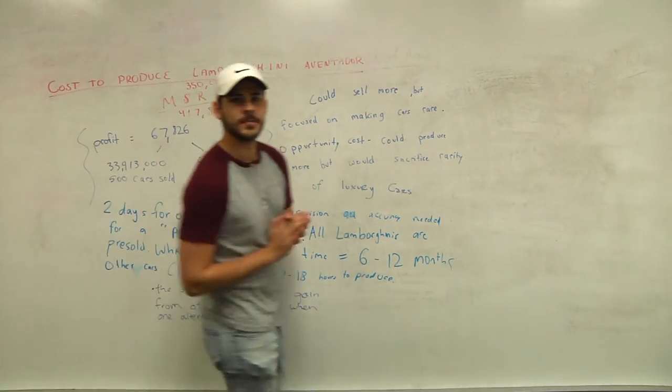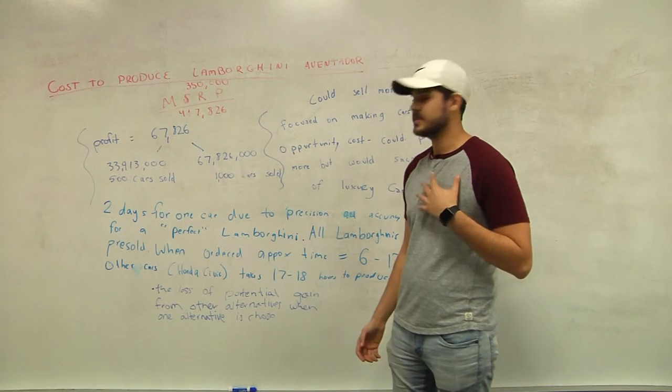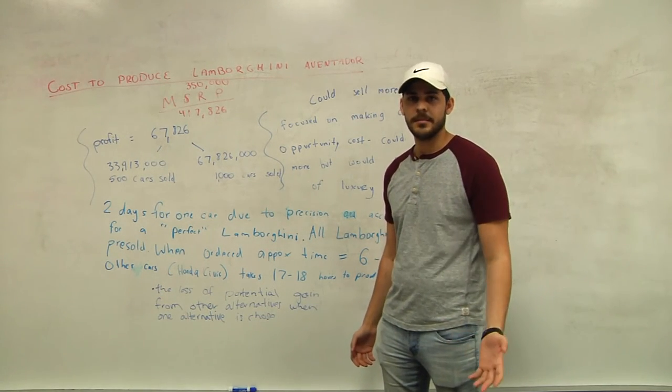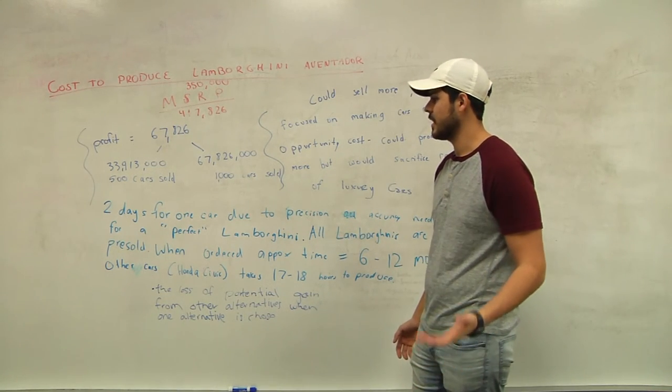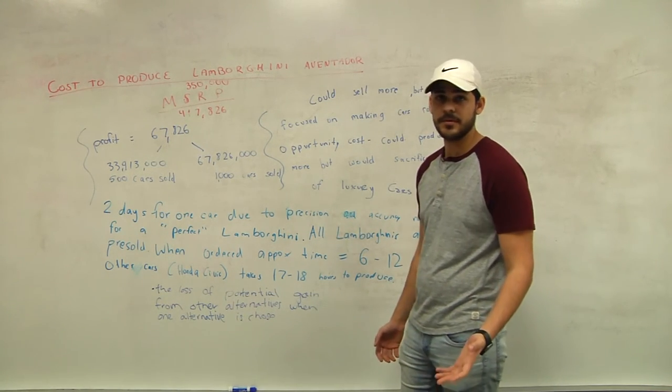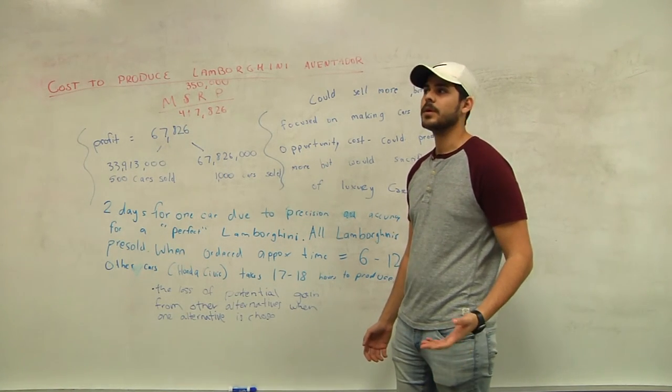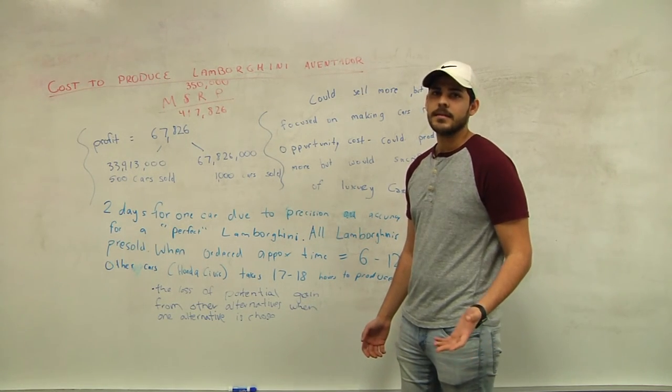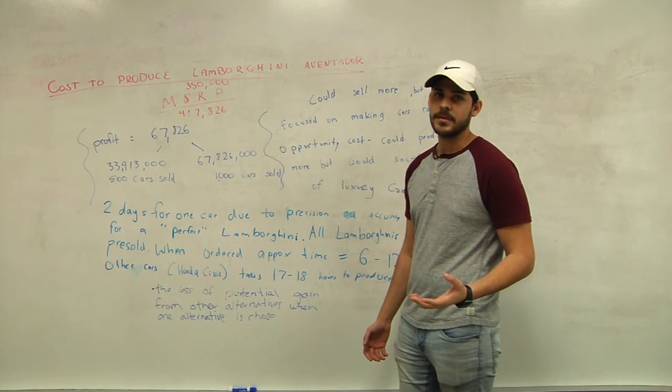All right, now let's talk about opportunity cost. What is opportunity cost? Well, for us, opportunity cost is it takes us two days to make one of the Lamborghinis because we want to be precise and accurate, and we want to make your Lamborghini perfect, and we use high-quality materials that cost a lot of money. Well, we could be building Honda Civics for less more money than it would cost us, and it would take us less time to build multiple of them. We could be building up to 100 Honda Civics in 17 to 18 hours.